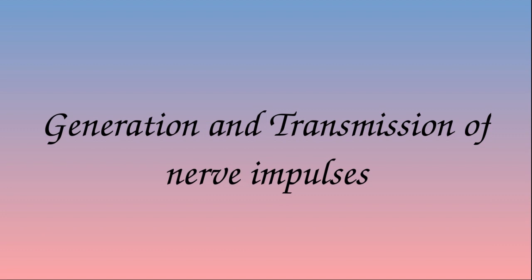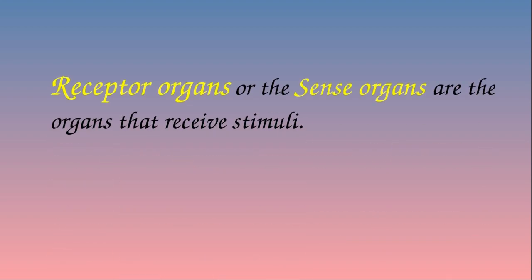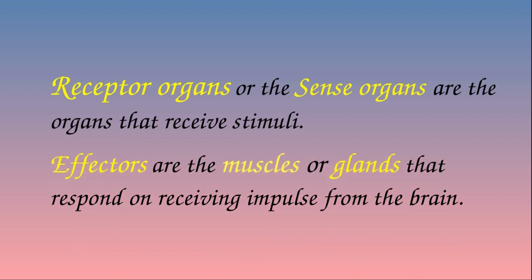Let's begin with generation and transmission of nerve impulses. What are sense organs or receptor organs? The sense organs are the organs that receive stimuli. When there is an external stimulus, it is received by certain organs which have specialized receptor cells. Those organs are called sense organs or receptor organs. The sense organs receive stimuli and pass them to the brain through the nerves.